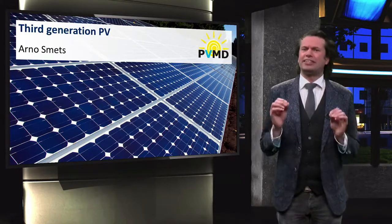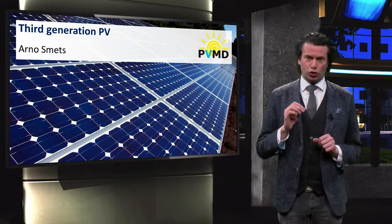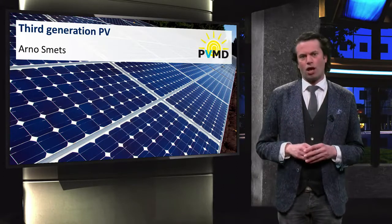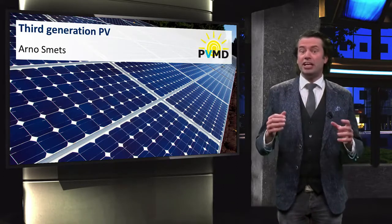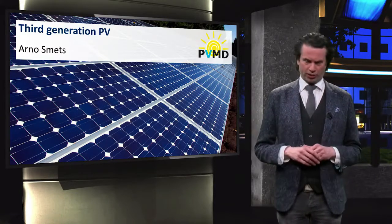The Schockley-Kweiser limit sets a theoretical upper limit for single junction solar cells based on a number of assumptions. Third generation PV challenges those assumptions and aims to go beyond the Schockley-Kweiser limit.